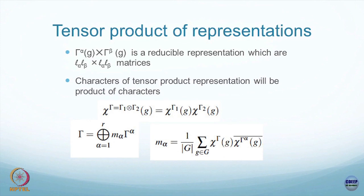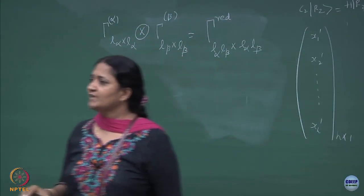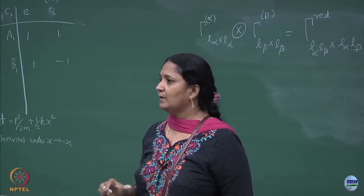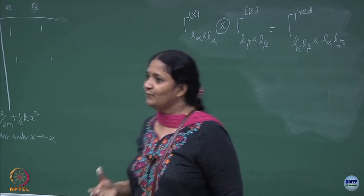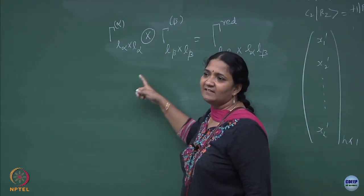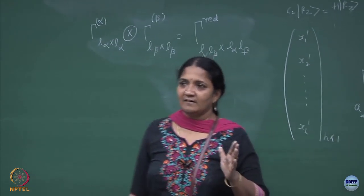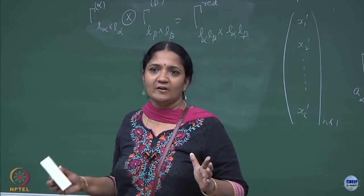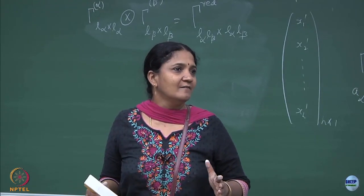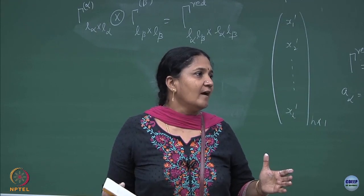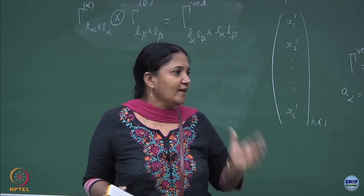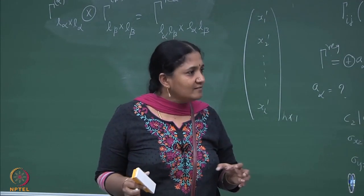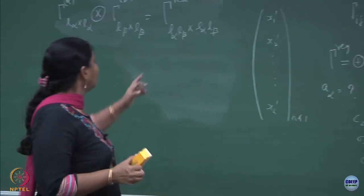It will always be a reducible representation. Another way of using this tensor product is that vectors are the fundamental objects in nature — fundamental observables. Scalars are also one observable, but vectors are the basic observables. When I do a tensor product of a two-particle system, I take a 2×2 matrix acting on coordinates x1, y1 and another acting on x2, y2. You can then look at what happens to those reducible representations — how to break them.